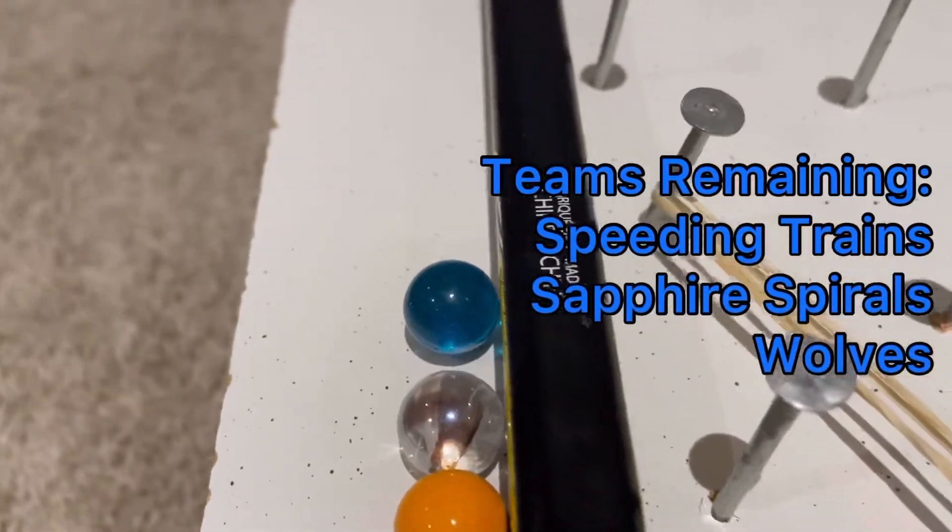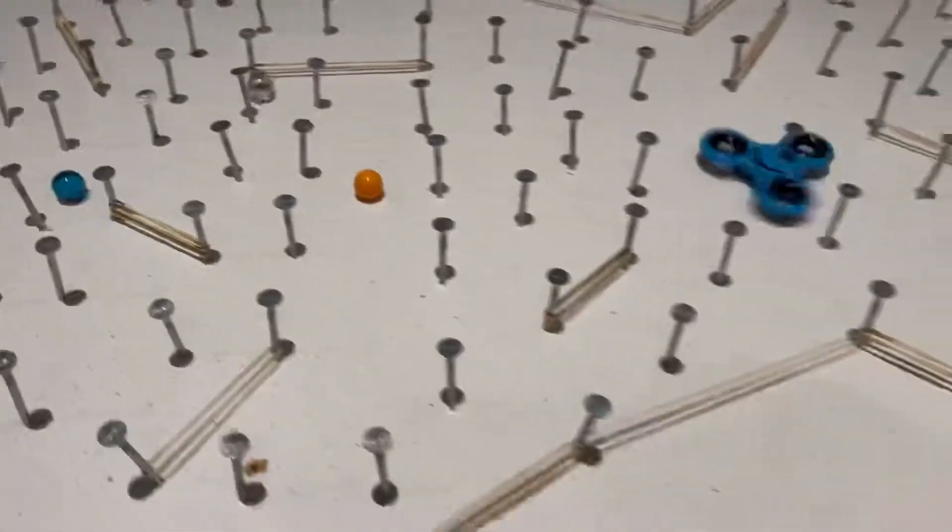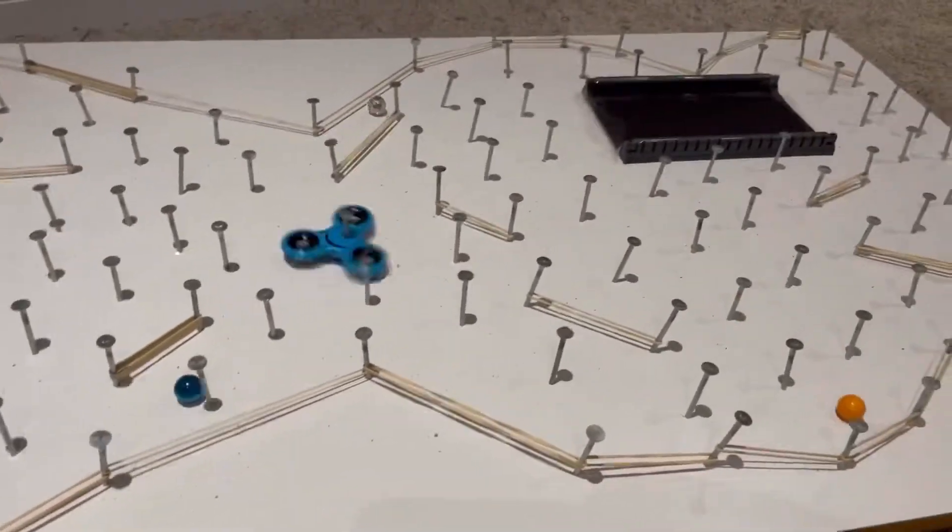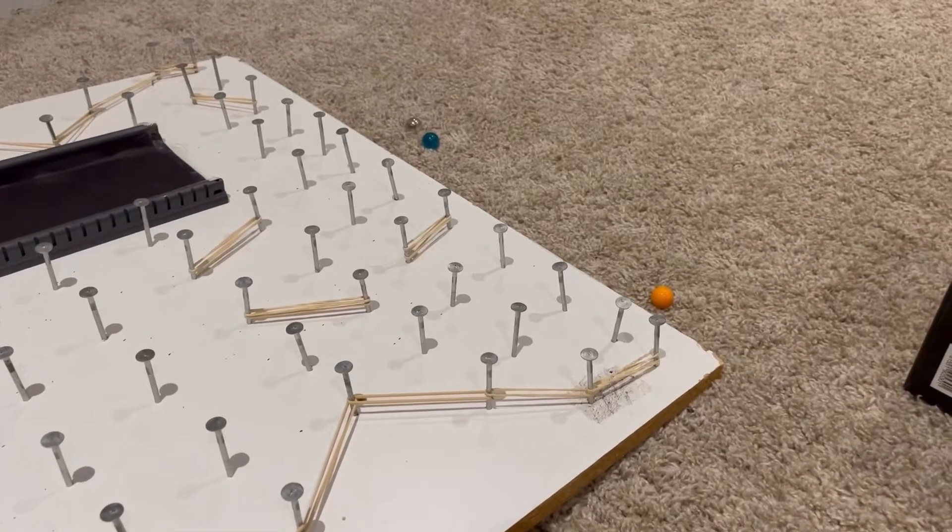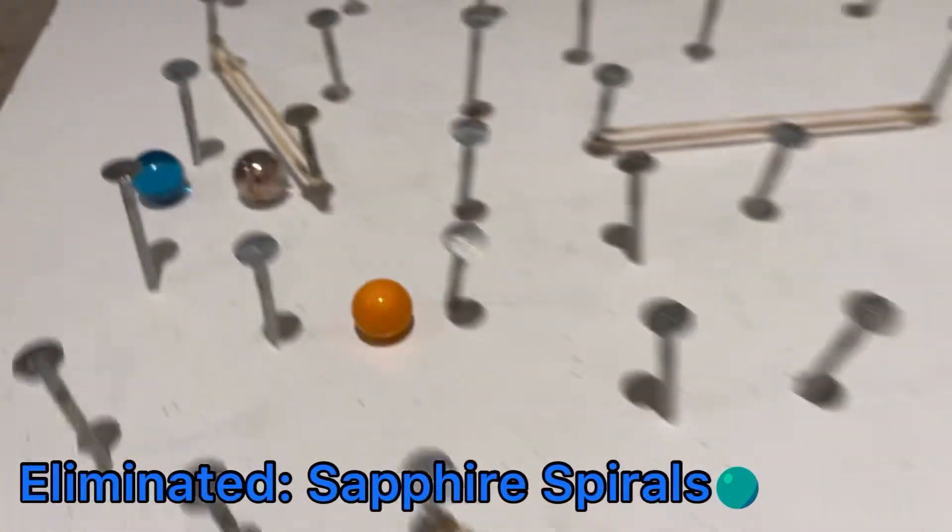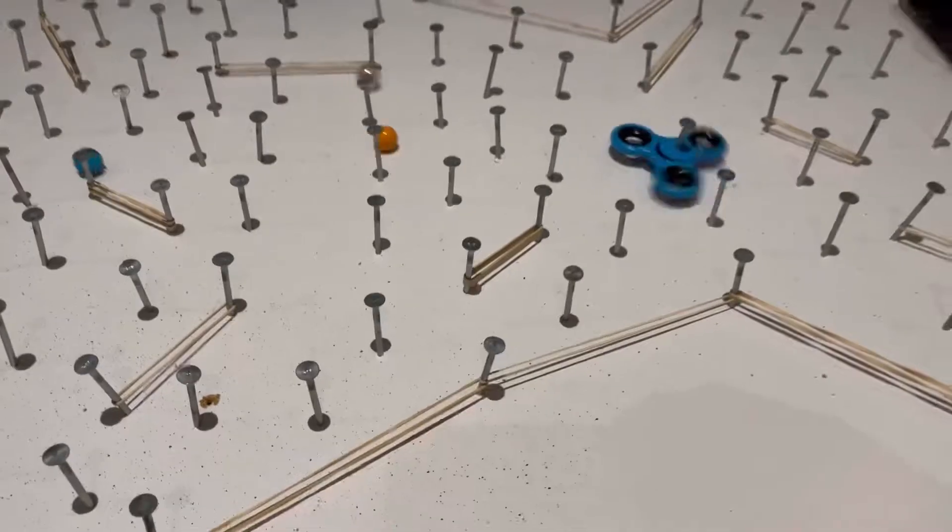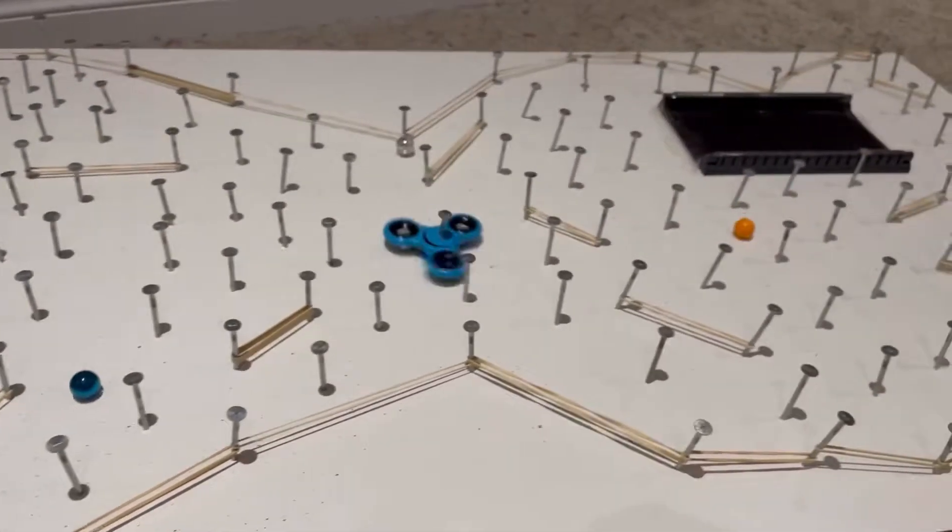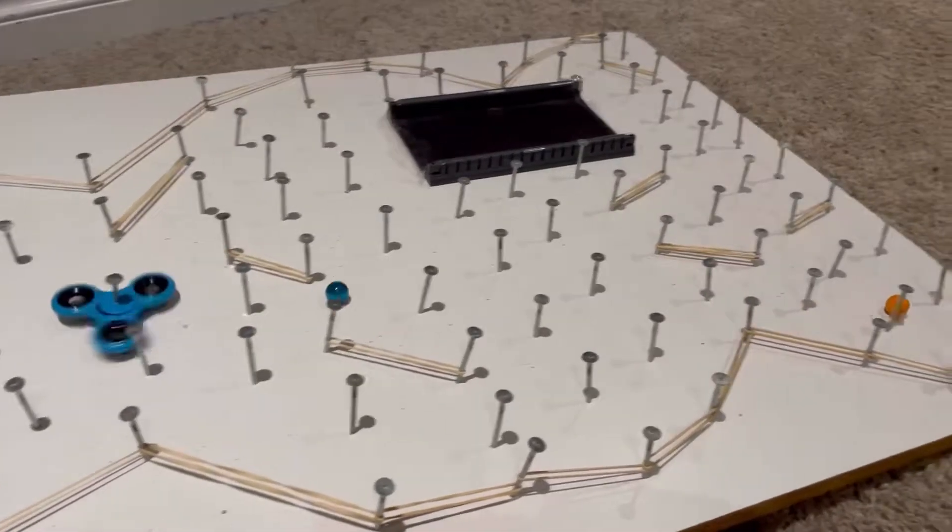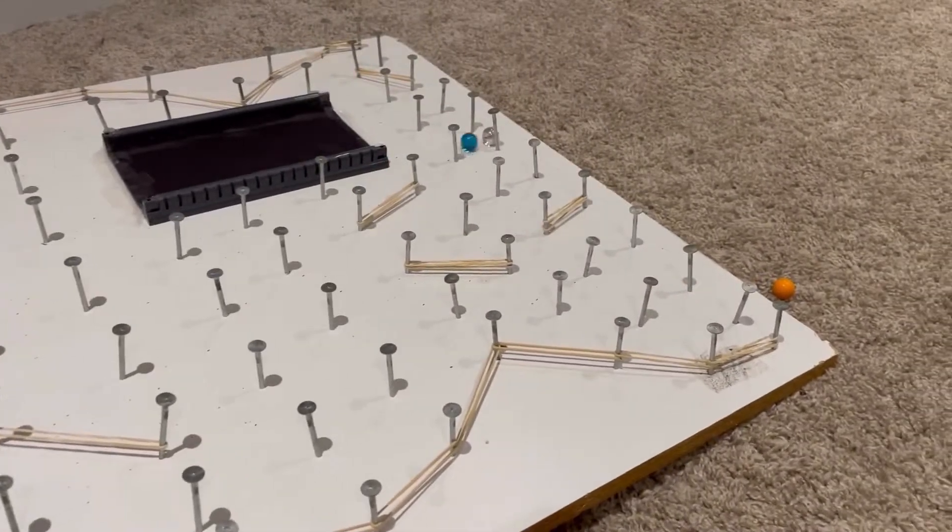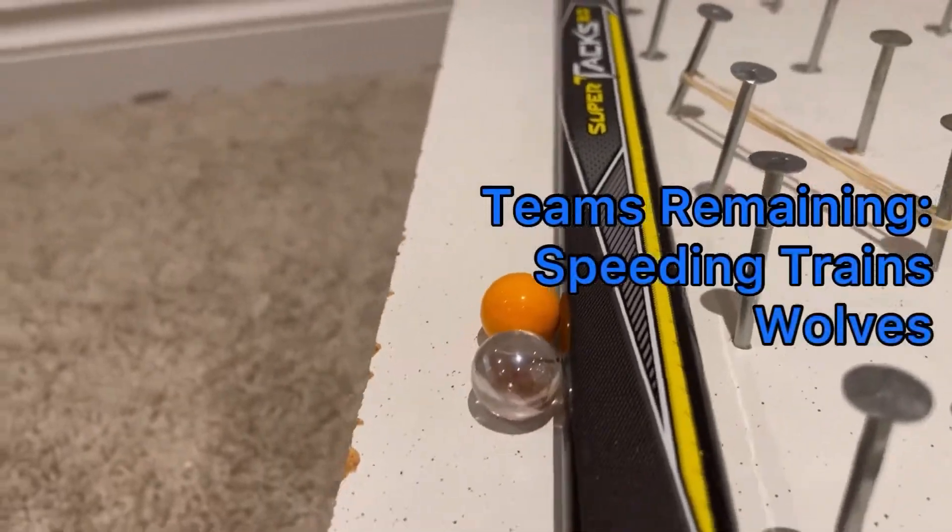Oh, if they didn't hit that penultimate nail, they would have made it. But here we go. Top three. Who will take third? Speeding Trains out in front. Sapphire Spirals struggling on the top. They hit into Wolves. Some contact across the line, but Wolves were there to block. Never really in question was this race until the very end. Sapphire Spirals hit so many nails, and look at how fast they went, but the Wolves blocked their exit.